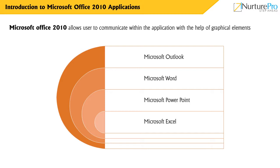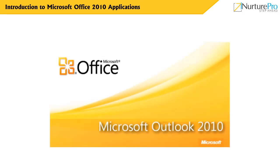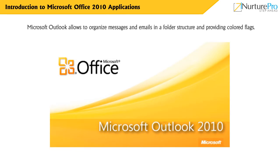First, let's learn about Microsoft Outlook. Microsoft Outlook is one of the basic modes of communication used nowadays. It helps in managing emails, calendars, contacts, accounts and web applications. Outlook allows you to organize messages and emails in a folder structure. It even provides colored flags which can be tied to reminders.